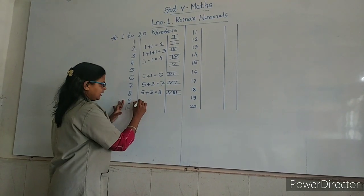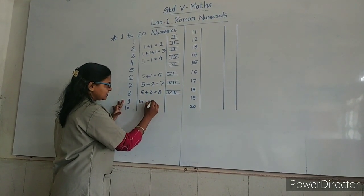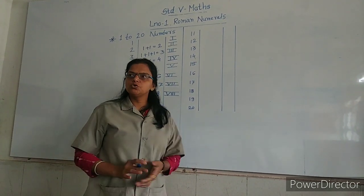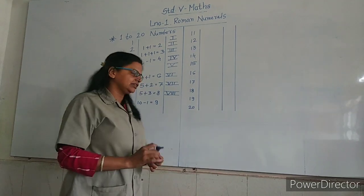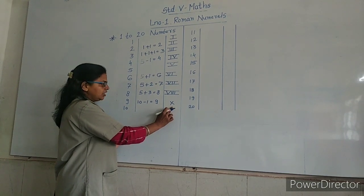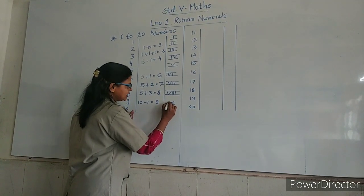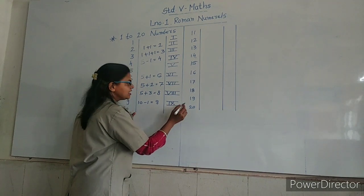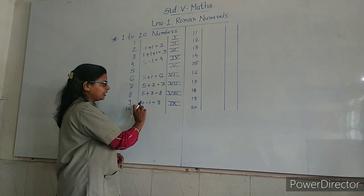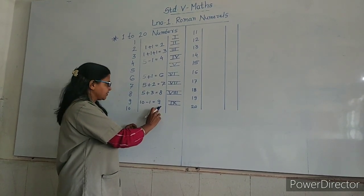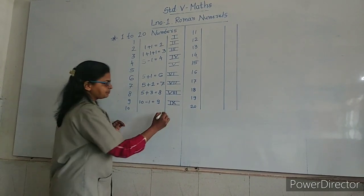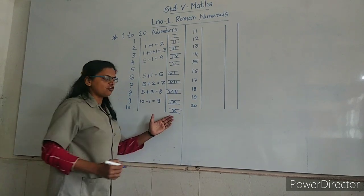Now, 9: 10 minus 1 is equal to 9. You know students, we use symbol X for 10. So, 10 is X. Now, write I on its left-hand side. Subtract the value of I from X. So, 10 minus 1 is 9. 9 is IX. Last one is 10: X is the symbol used for ten.